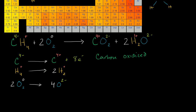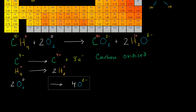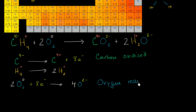So what happened to oxygen? Oxygen gained electrons. What is gaining electrons? Reduction is gaining — gaining electrons is reduction. So oxygen has been reduced. Now, what oxidized carbon? Carbon lost electrons to the oxygen, so carbon was oxidized by the oxygen — which is part of the motivation for calling it oxidation. And what reduced the oxygen? Oxygen took those electrons from the carbon. So oxygen was reduced by the carbon.